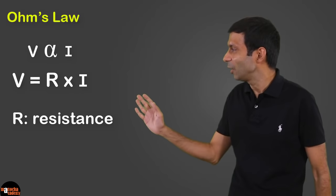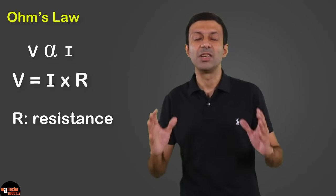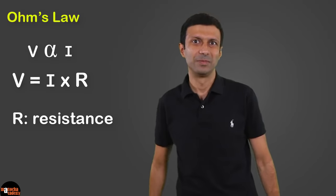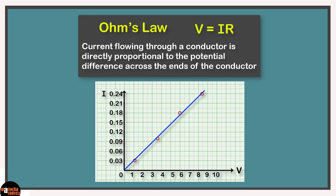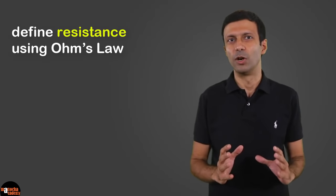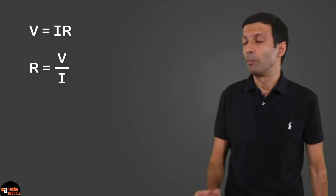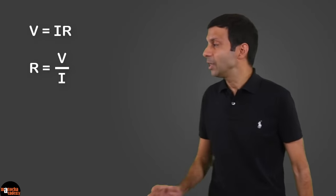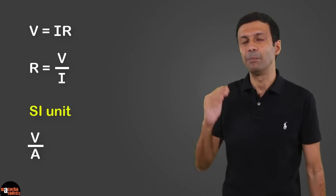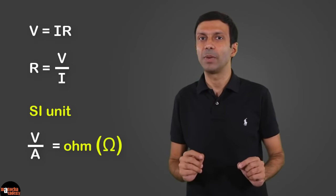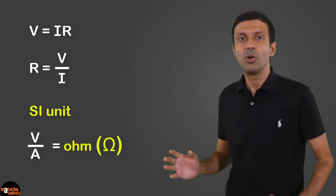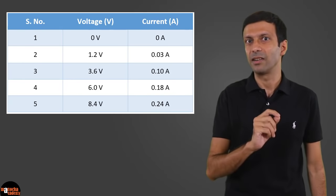We usually remember Ohm's law as V equals IR. To define resistance using Ohm's law, let's bring R to the left-hand side of the equation: R equals V divided by I. So resistance of a conductor is defined as the ratio of the potential difference applied across the ends of a conductor to the current flowing through it. The SI unit of resistance is volts per ampere, which is called Ohm and is denoted by the omega symbol.